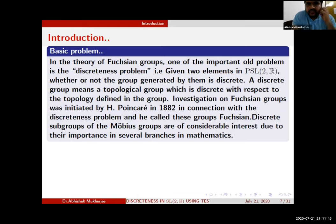Investigation on Fuchsian groups was initiated by H. Poincaré in 1882 in connection with the discreteness problem. He called these groups Fuchsian. Discrete subgroups of the Möbius groups are of considerable interest due to their importance in several branches of mathematics.